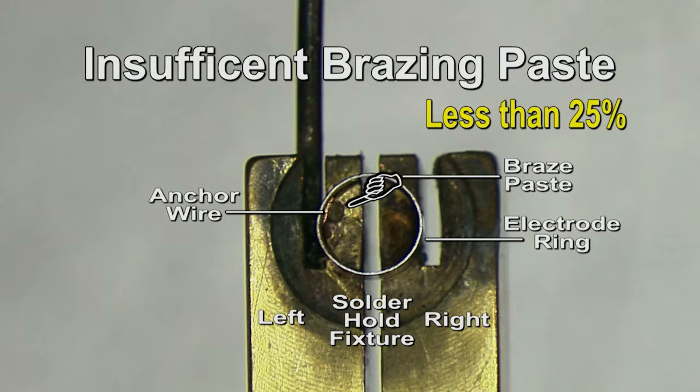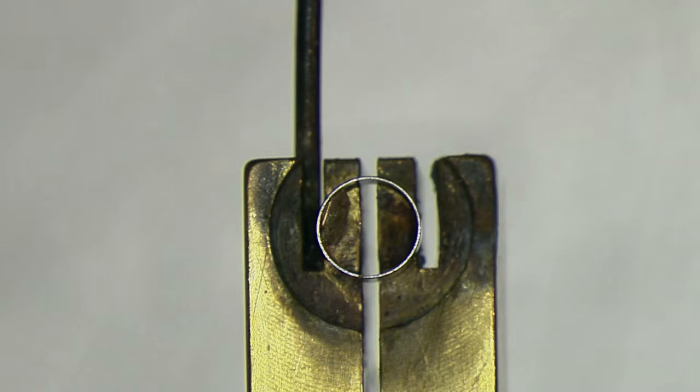To figure out what is just right, look at the left half of the ring holding fixture. If the paste covers less than 25% of the area, that is too little, or insufficient. Scrap the ring.